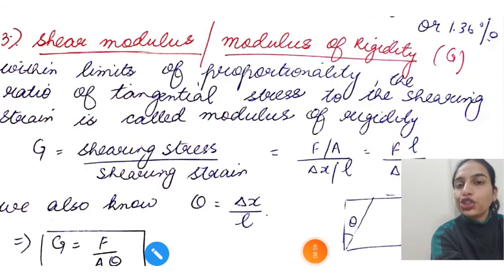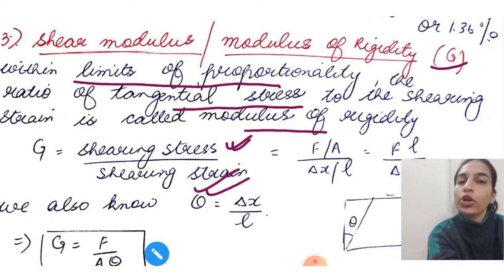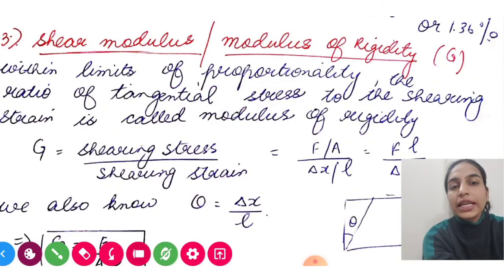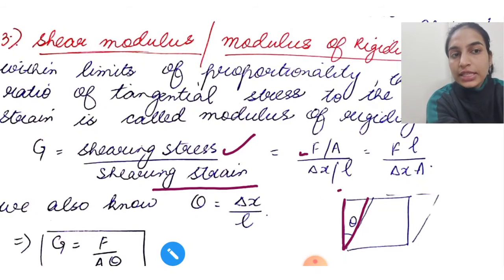The third and last is shear modulus, which we call modulus of rigidity. Its symbol is G. Again, within limits of proportionality - important to mention - the ratio of tangential stress to shearing strain is called modulus of rigidity. Shearing stress upon shearing strain. Whether you say tangential or shearing, it's the same. I told you this in the last class also.